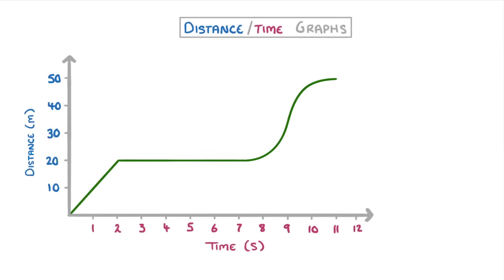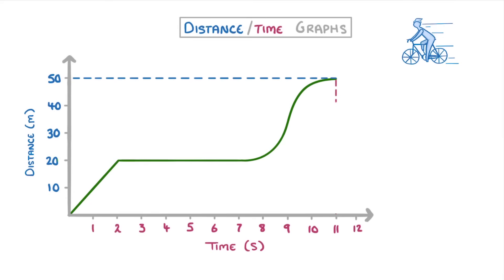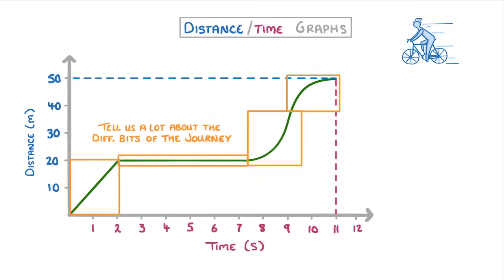Distance time graphs, like this one here, allow us to visualize how far something has traveled in a certain period of time. For example, this one here could represent the journey of a cyclist. As well as telling us that she's traveled a total of 50 meters in 11 seconds, graphs like this also tell us a lot about the different parts of the journey, and you need to be able to interpret each of these different stages.